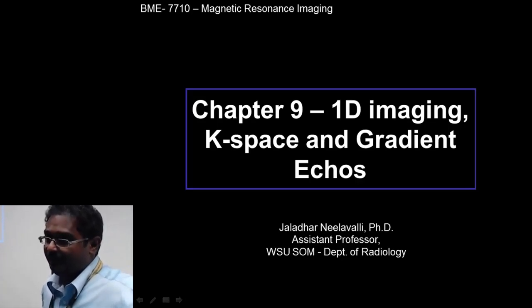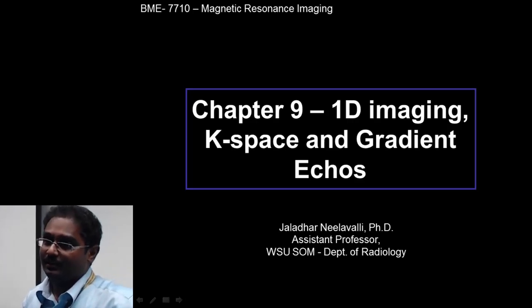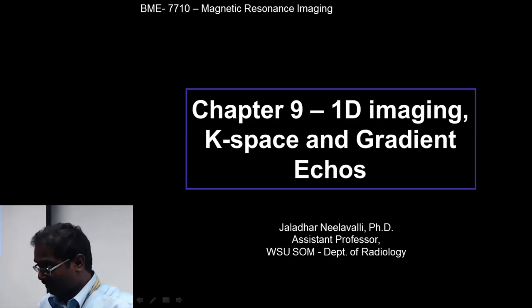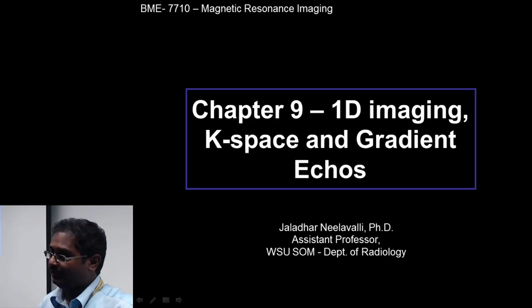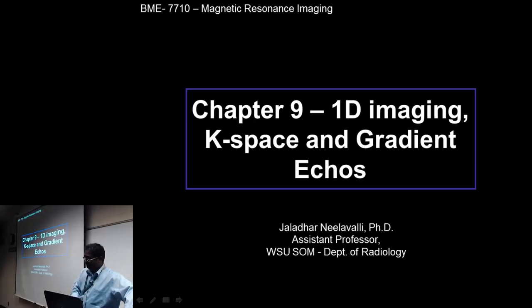Today, last class we went over how the magnetization responds to a series of RF pulses, what kind of signal you would get under different conditions like homogeneous versus non-homogeneous field, and how to write the equations of the magnetization under the influence of different RF pulses. In this class, we are going one step further to look at how we encode space. Last class we just looked at what kind of signal you would get from the whole sample — we haven't done any spatial encoding. In this lecture we will try to understand how spatial encoding has been done.